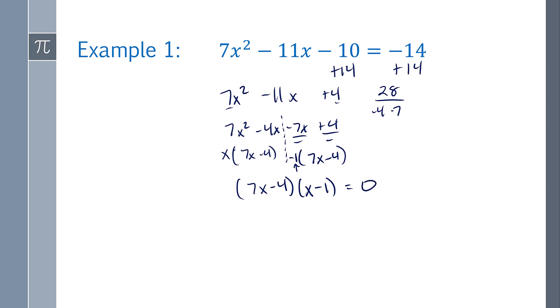So now for the zero product principle, this is my a, this is my b. And since it equals 0, I can assume the whole a equals 0 or b equals 0. So I can say 7x minus 4 equals 0, and x minus 1 equals 0.